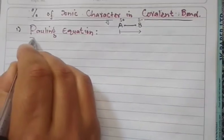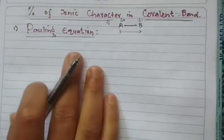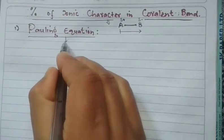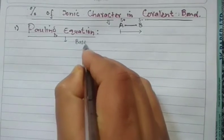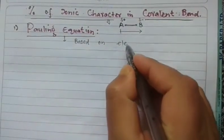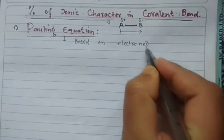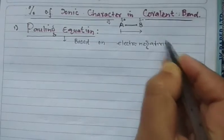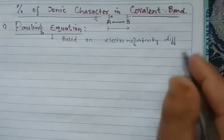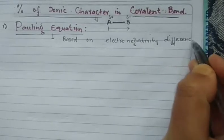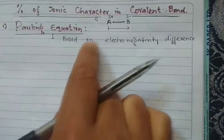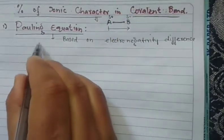It is fairly straightforward, though questions always come from this topic. Pauling's method calculates the percentage of ionic character based on the electronegativity difference. This method is purely based on the electronegativity difference between the two atoms forming the bond. Based on that difference, we can calculate the ionic character in a covalent bond as per Pauling's equation.